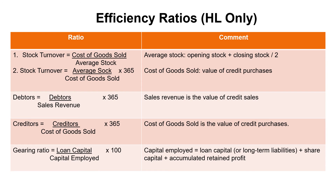For stock turnover, watch out — there are two different methods of calculation. One gives you the number of times you turn over your stock per year or per quarter; the other gives you the number of days. If the number of times goes up, you're theoretically selling more products because your stock levels are going down and you're replacing stock more often — a sign of efficiency. For stock turnover in days, you look at how long it takes before you need to replace your stock.